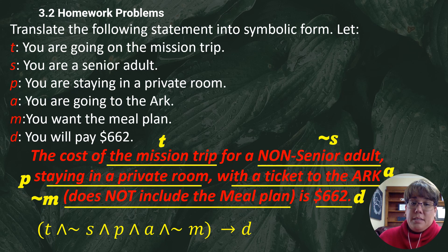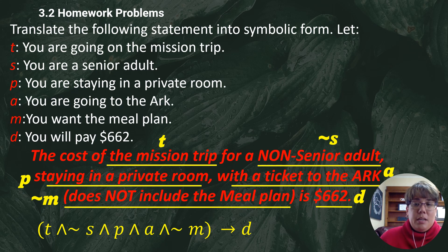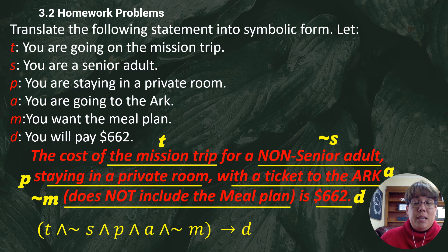That makes sense — all of those conditions combined with ANDs, and then when all of that is true, you are going to pay $662. You'll have several problems like this on your homework where you pick out the statements. Take your time as you work through these truth tables, make sure you're checking your work, and feel free to reach out to me or your instructor if you have any questions.